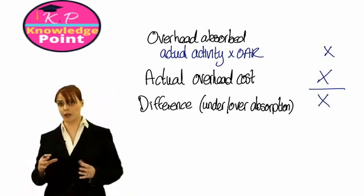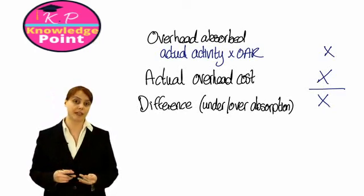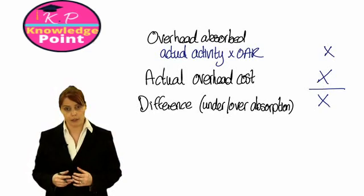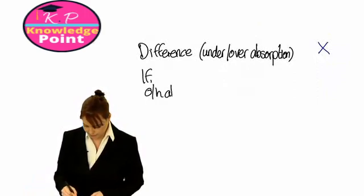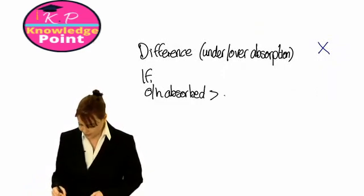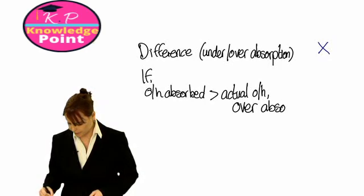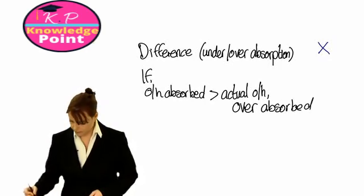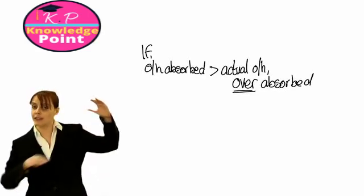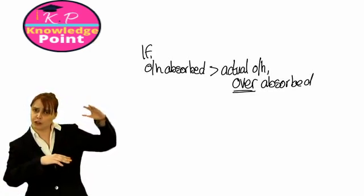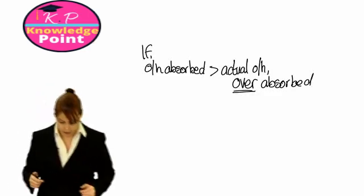When we say under or over absorption, what we mean is: have we charged too much overhead to our production account, or have we charged too little? The rule to remember is: if our overhead absorbed is greater than our actual overhead cost, then we have over absorbed. This means the overhead we have charged to our production account is more than the actual overhead we have incurred — we have charged too much, so we have over absorbed.